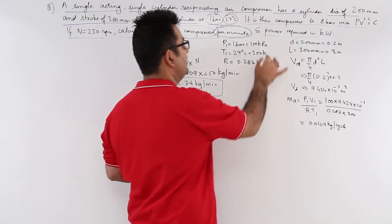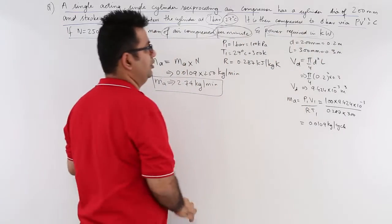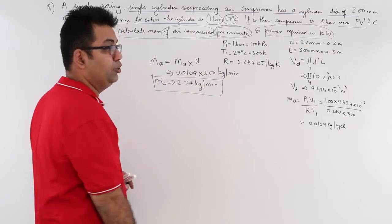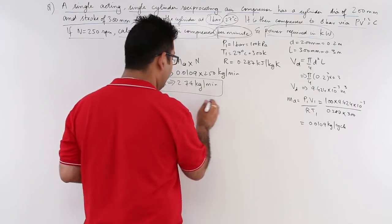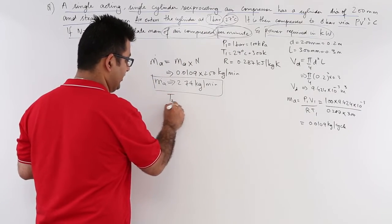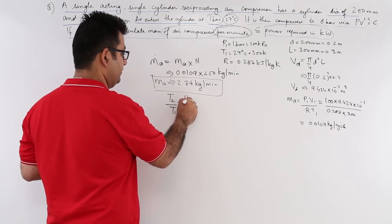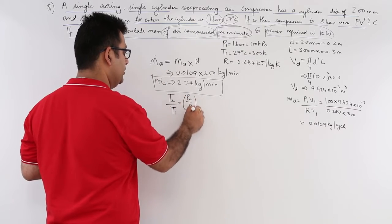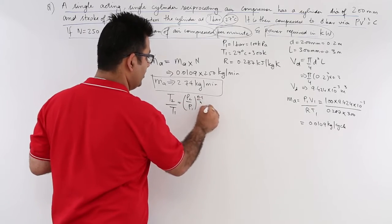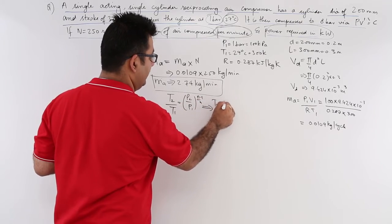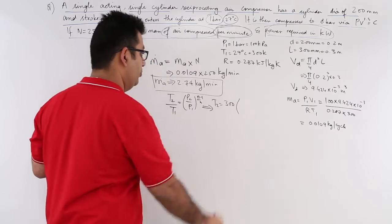The next part of the question is the power required in kilowatts. For that I need T2. Now this is a polytropic compression and to find out T2, I will use this expression which is P2 by P1.